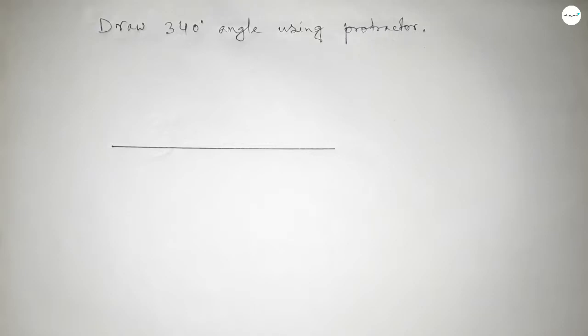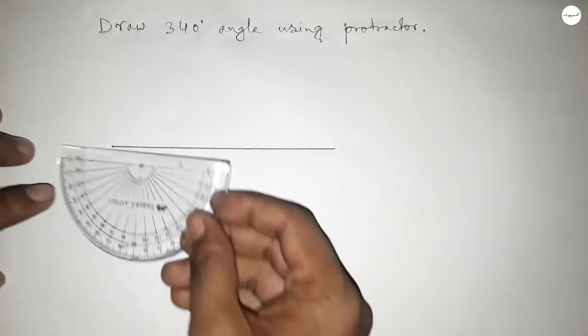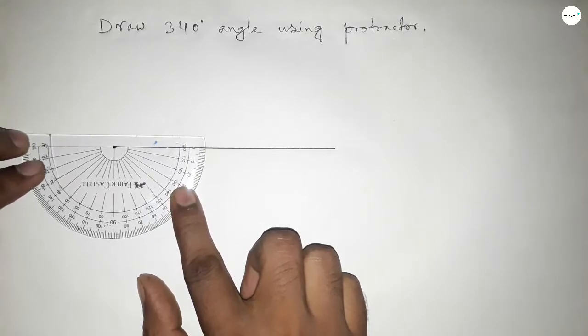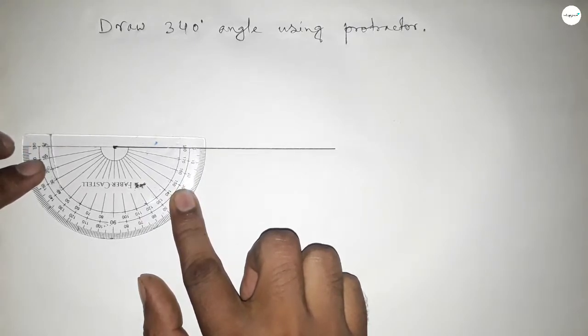Put the protractor on the line perfectly, then count the angle. So first, putting the protractor on the line perfectly. Okay, next this...